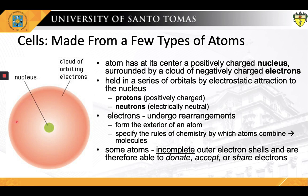The nucleus in turn consists of two kinds of subatomic particles: first, protons, which are positively charged, and secondly, neutrons, which are electrically neutral. To understand how atoms bond together to form molecules that make up living organisms, we have to pay special attention to their electrons. In living tissues, it is only the electrons of an atom that undergo rearrangements — they form the exterior of an atom and specify the rules of chemistry by which atoms combine to form molecules.